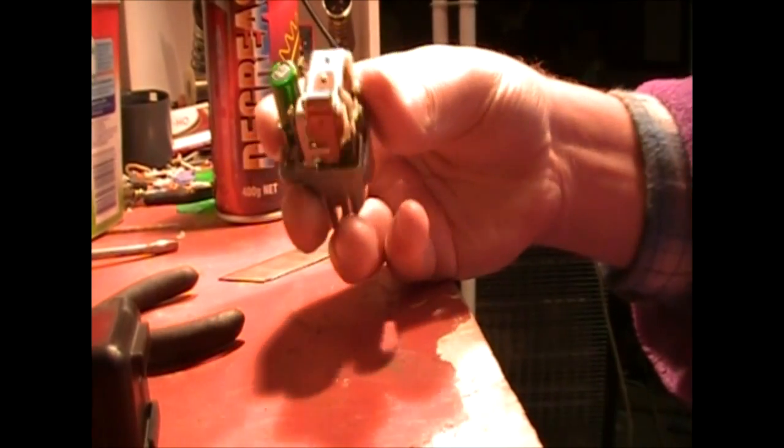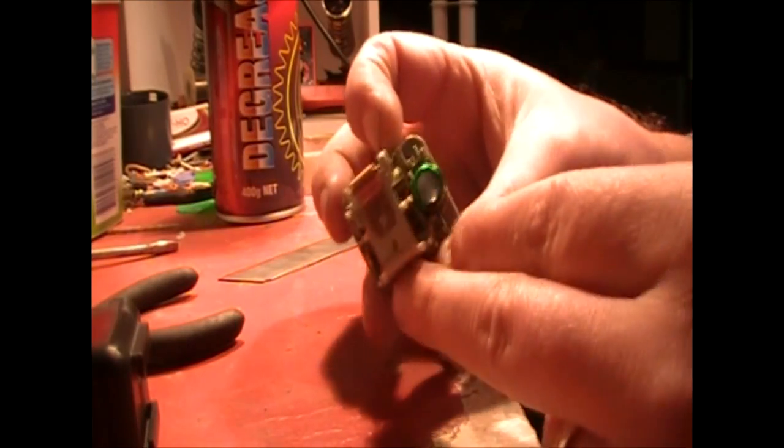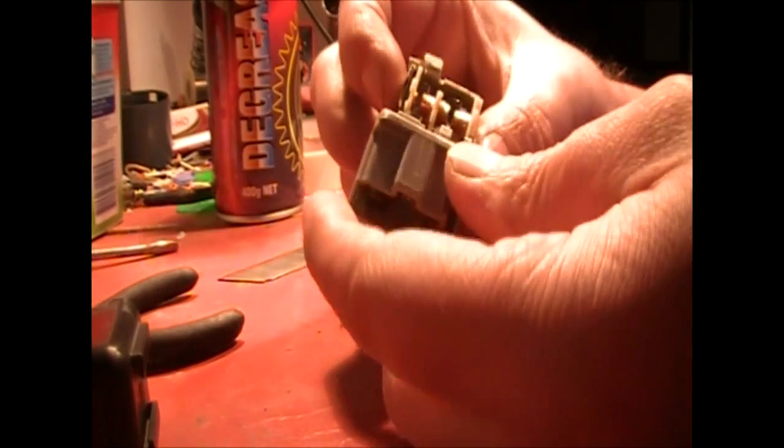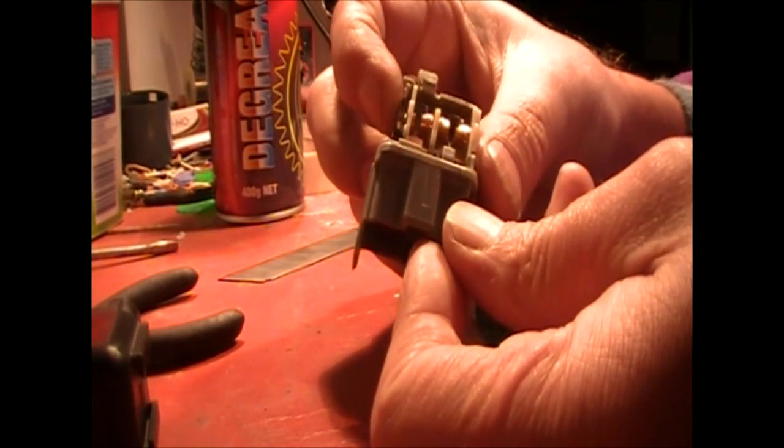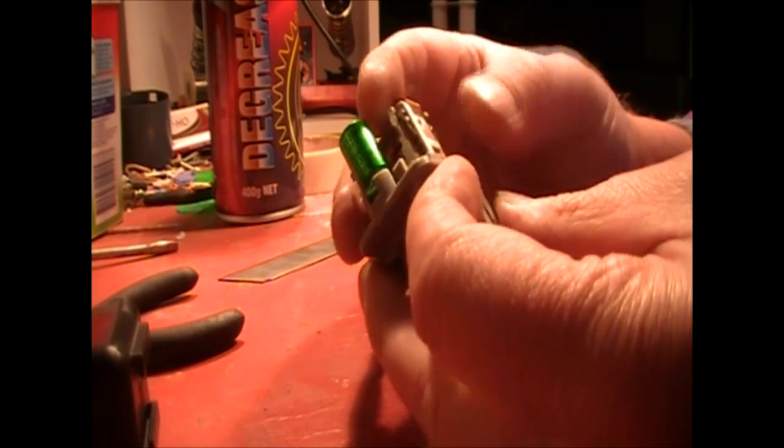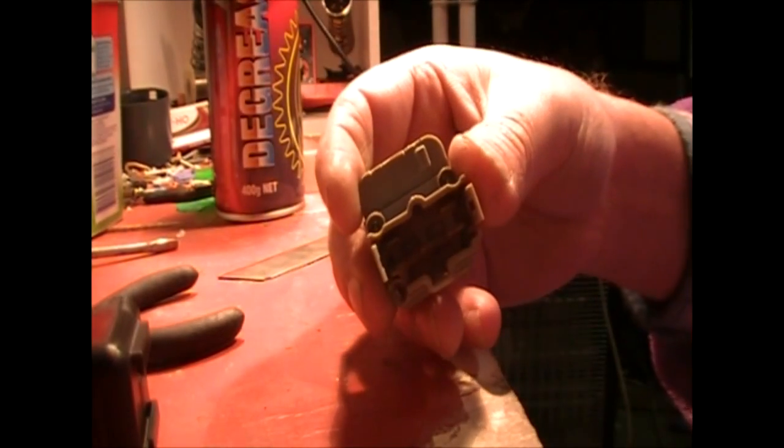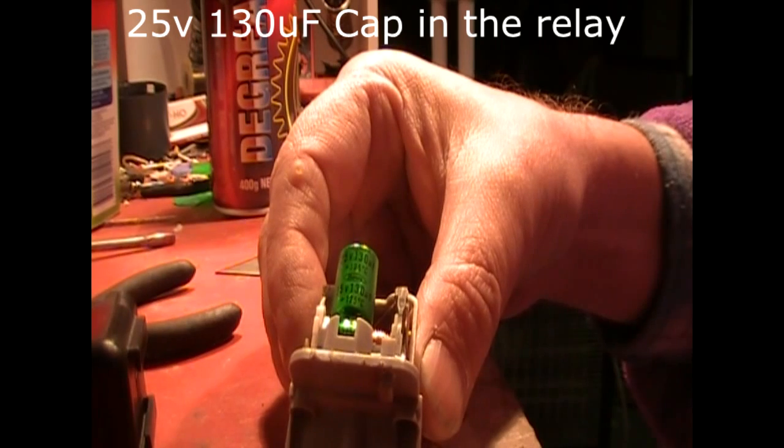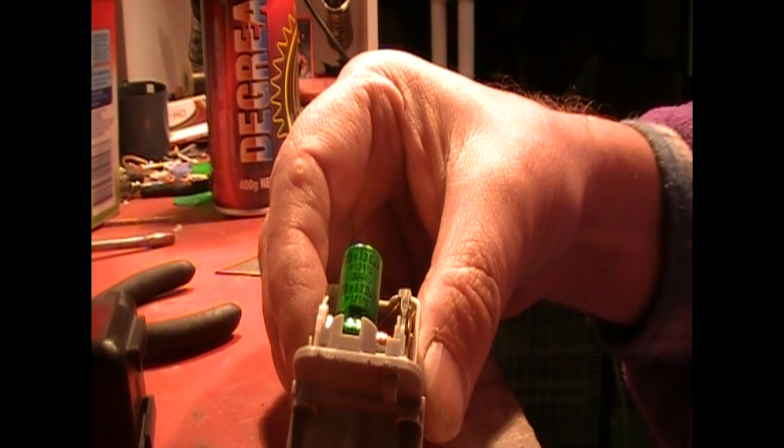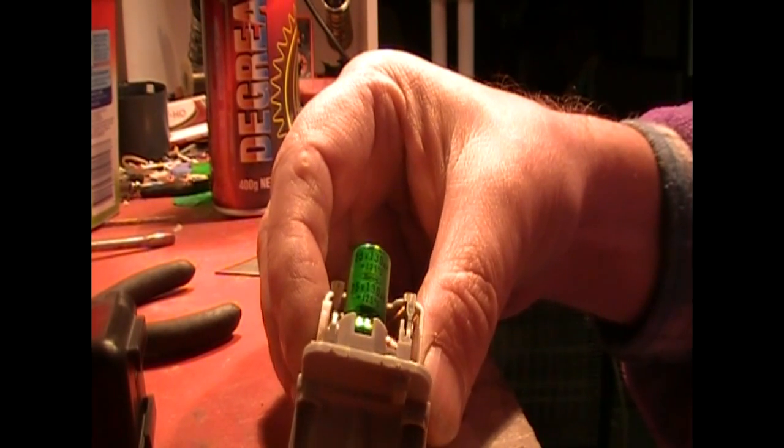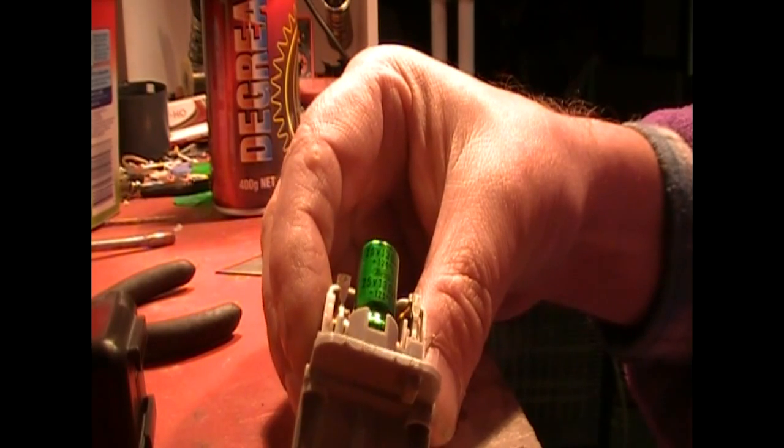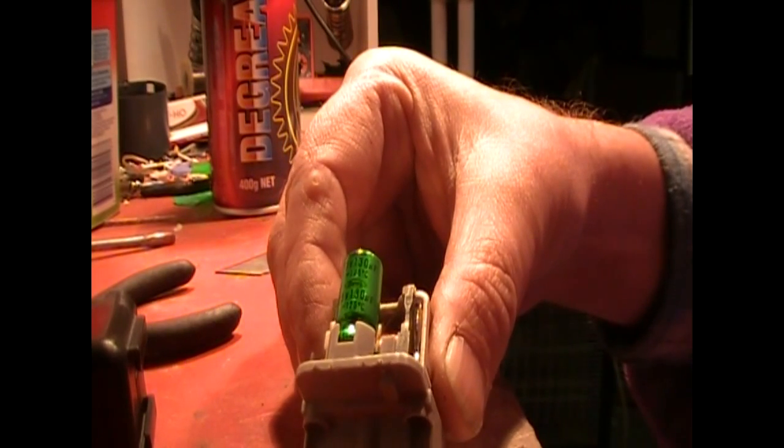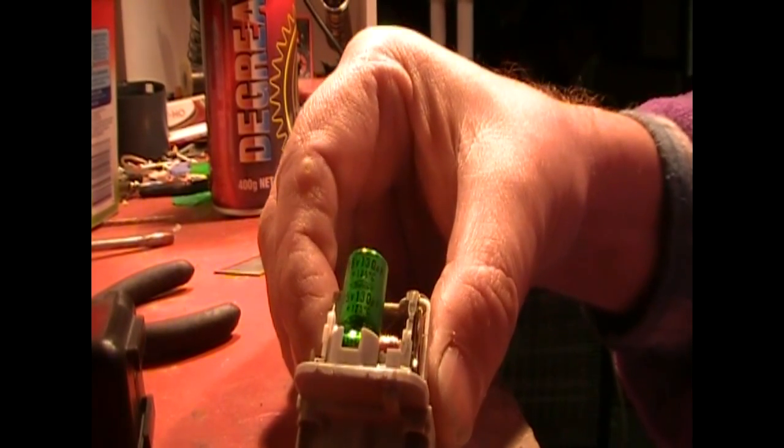So you've got the relay here and you can see that it's got a capacitor in it. It's a standard functioning relay. There's a capacitor there. If the capacitor blew I don't really think that'll make a huge difference. It's more to keep a steady current voltage for the relay rather than doing anything more than that.